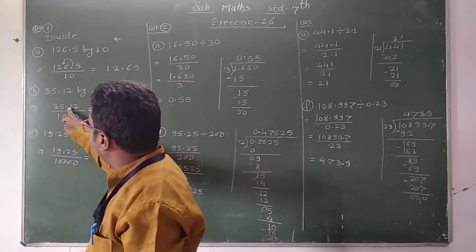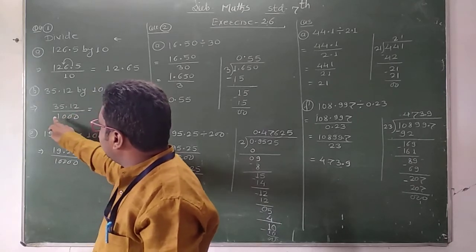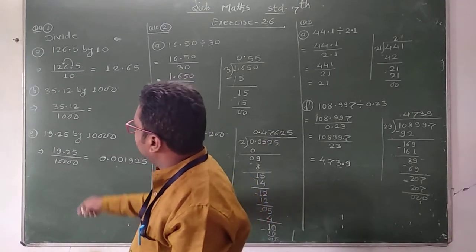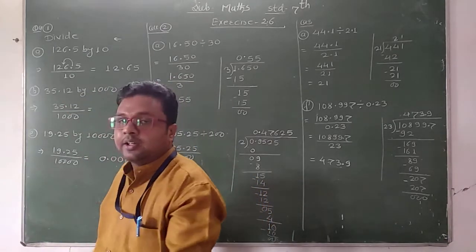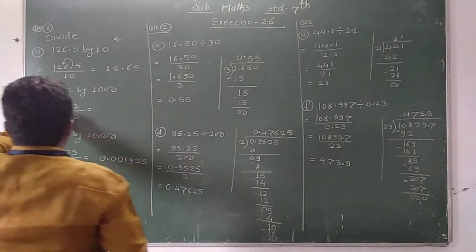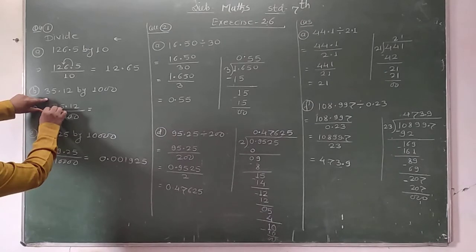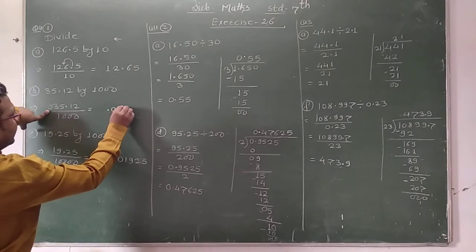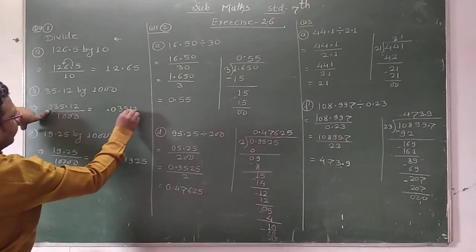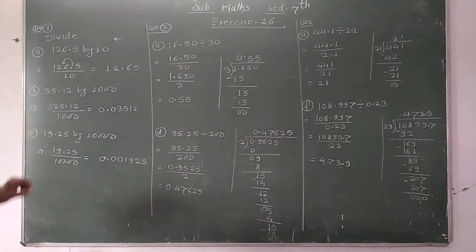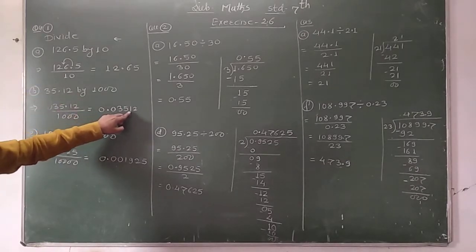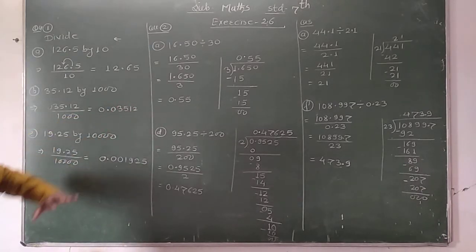Now see the next question: 35.12 is divided by 1000. We write 35.12 divided by 1000. Now 1 is followed by how many zeros? Three zeros. Therefore according to the rule we have to shift the decimal point 3 digits to the left hand side. Only two digits are there before the decimal, so we take one more zero. In this way we get the answer 0.03512. This is the required answer.